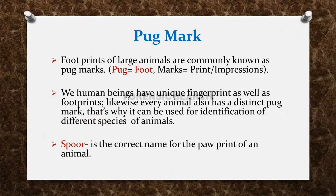Basically, 'spoor' is the correct name for the paw print of an animal. Whatever paw print is found of an animal, the correct word for it is spoor. But the footprint of a tiger specifically is called a Pugmark.